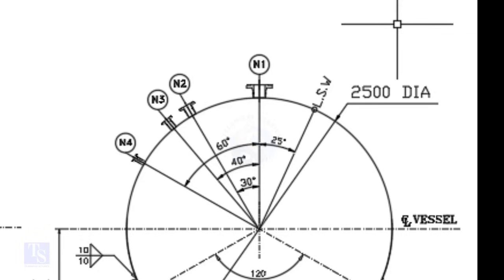N1 comes at 0 degrees, N2 at 30 degrees, N3 at 40 degrees, and N4 at 60 degrees. Nozzle N1 is rotated 25 degrees from LSW.